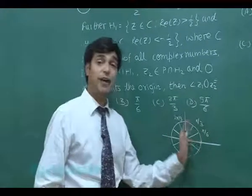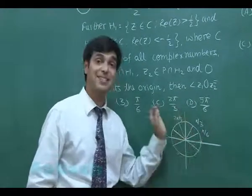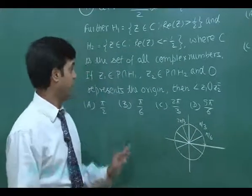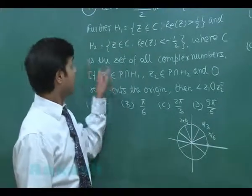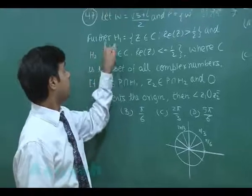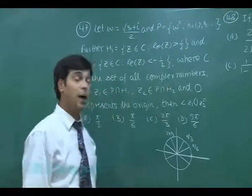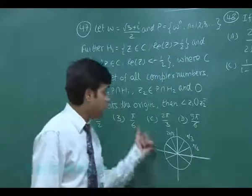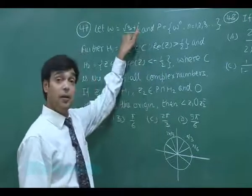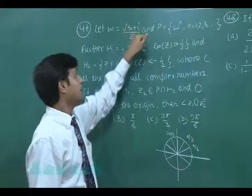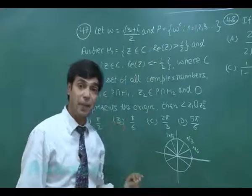z1 is in H1. The set H1 says that z is a complex number such that the real part of z is greater than half. When I see here, omega which is root 3 plus iota by 2 means with the angle pi by 6.